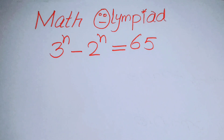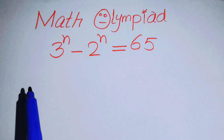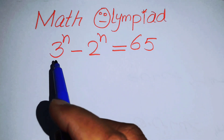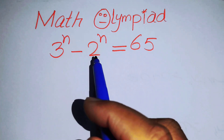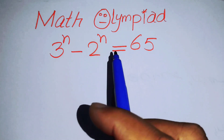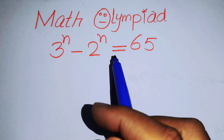Hello everyone, welcome back to the Map of Mathematics. In this video we are going to solve this nice algebra problem: 3 to the power of n minus 2 to the power of n equals 65.